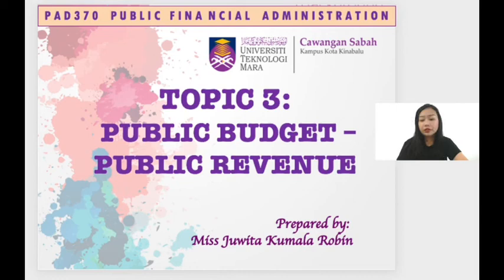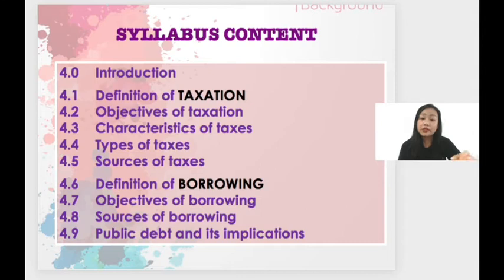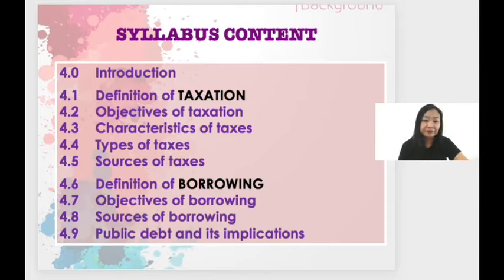Moving on to Chapter 3, which covers public revenue — specifically taxation and borrowing. The two main topics in public revenue are taxation and borrowing. For this chapter, I'm going to highlight the definition of taxation and borrowing, sources of taxes, and also sources of borrowing. Sources of taxes and sources of borrowing are two very important topics for you to understand.